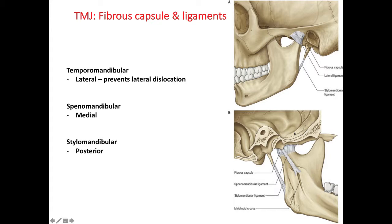Now let's talk about the fibrous capsule and ligaments of the temporomandibular joint. The lower part of the joint is surrounded by tight fibers which attach the condyle of the mandible to the disc. The upper part is surrounded by loose fibers which attach the disc to the temporal bone. Thus, the articular disc is attached separately to the temporal bone and the mandibular condyle, forming what could be considered two joint capsules. These attachments stabilize the disc but allow rotation over the condyle. The longer fibers joining the condyle directly to the temporal bone may be regarded as reinforcing.